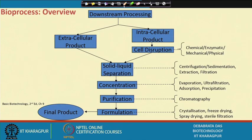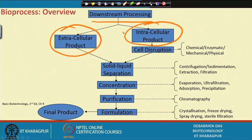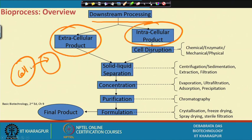In this presentation, I will discuss what the different steps involved in downstream processing are. In a biological system, we have two types of products: one is extracellular and another is intracellular. For extracellular products, the product comes out of the cell, so we first separate the cells, then filter and purify to get the product.